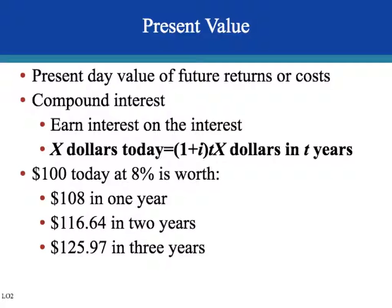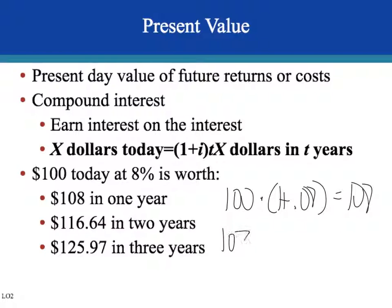Compound interest is when we are earning interest on previously earned interest, and this needs to be taken into account in order to calculate present value. So let's say we have $100 today and interest is 8%. In one year, we'd have 100 times 1 plus 0.08, which gives us $108 in year 1.